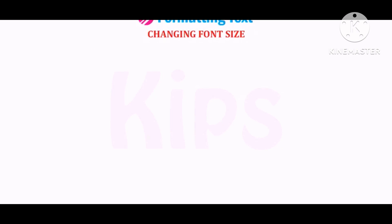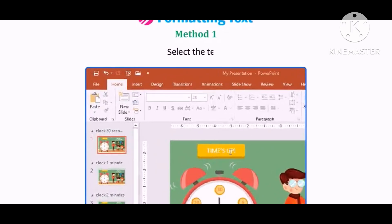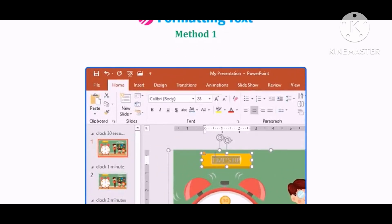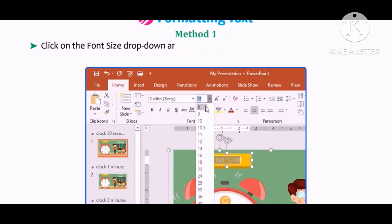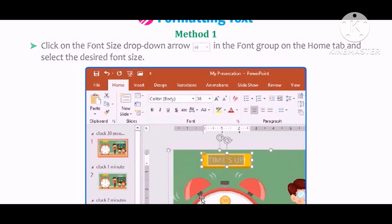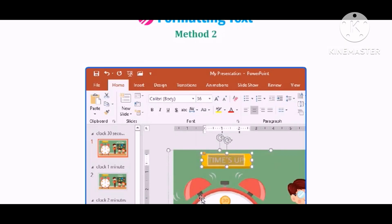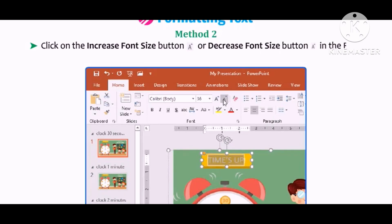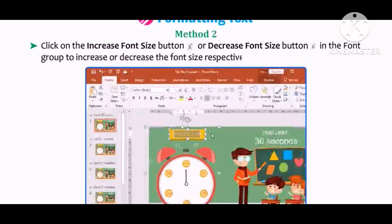Let us learn how to change font size. There are two ways to change the font size of text. Method 1: Select the text, click on the Font Size drop-down arrow in the Font group on the Home tab, and select the desired font size. Method 2: Click on the Increase Font Size button or Decrease Font Size button in the Font group to increase or decrease the font size respectively.